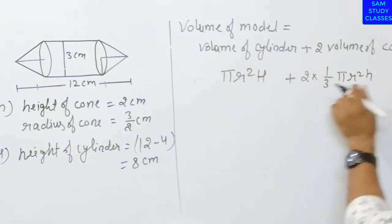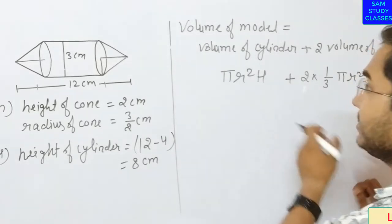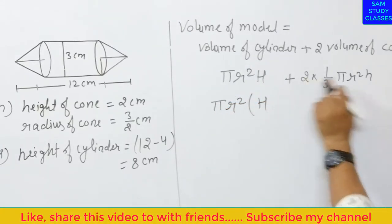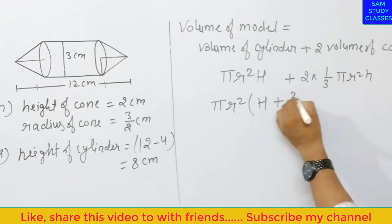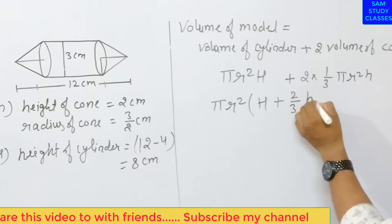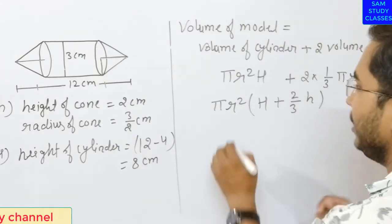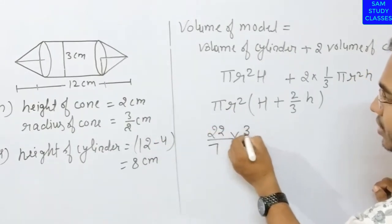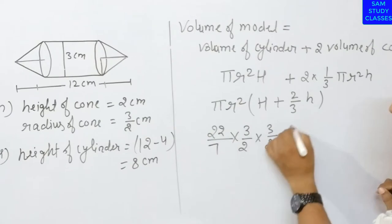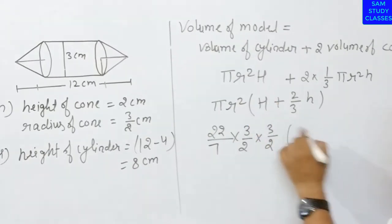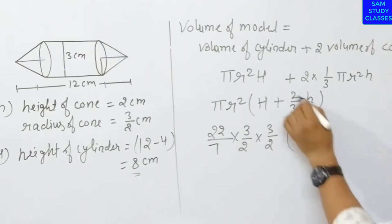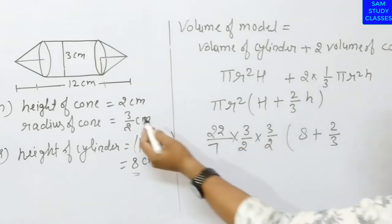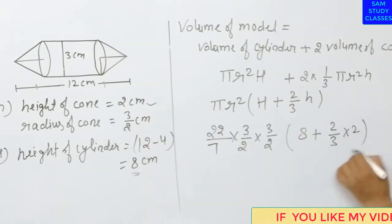Dono ka radius same hai, to common kya le sakte hain? π common le sakte hain, r² common le sakte hain. Iske baad bachega H, aur 2/3·h. Ab value put karenge: π ki value 22/7, r ki value 3/2 into 3/2, bracket mein H ki value 8 cm plus 2/3 aur h ki value 2 cm.